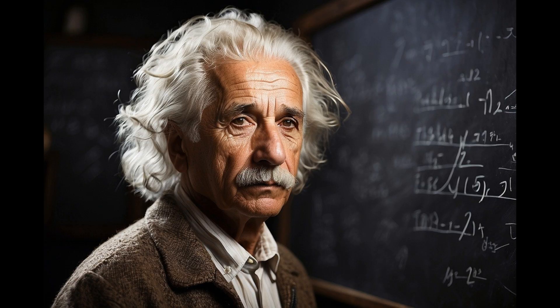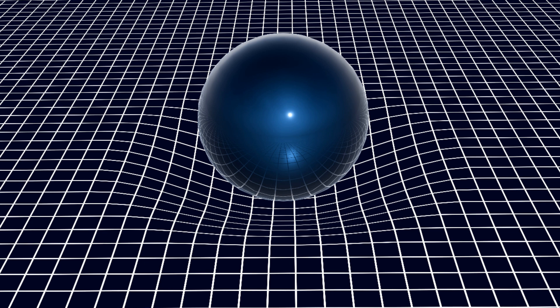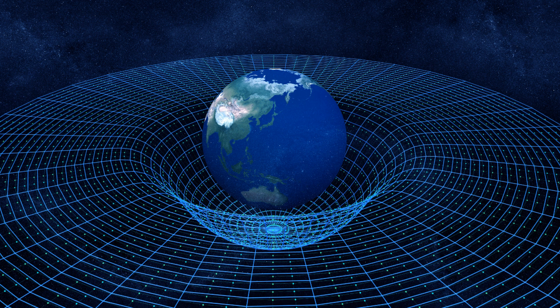Albert Einstein's theory of general relativity combined space and time into one fabric of the universe called spacetime, and it described gravity slightly differently. In general relativity, Einstein described gravity as a curvature of spacetime caused by a mass, so something with a large mass, such as the Earth, creates a big curvature in spacetime, whereas something with a small mass, such as our bodies, has hardly any effect at all.